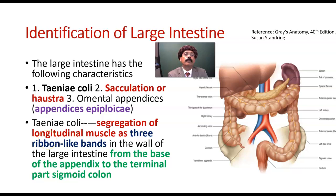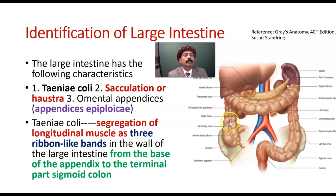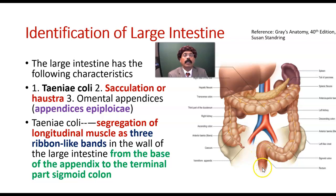Hello, my name is Dr. Deewan S. Raja. Today I will discuss about the identification of the large intestine. The large intestine includes the vermiform appendix, the cecum, ascending colon, transverse colon, descending colon, sigmoid colon, rectum and anal canal.